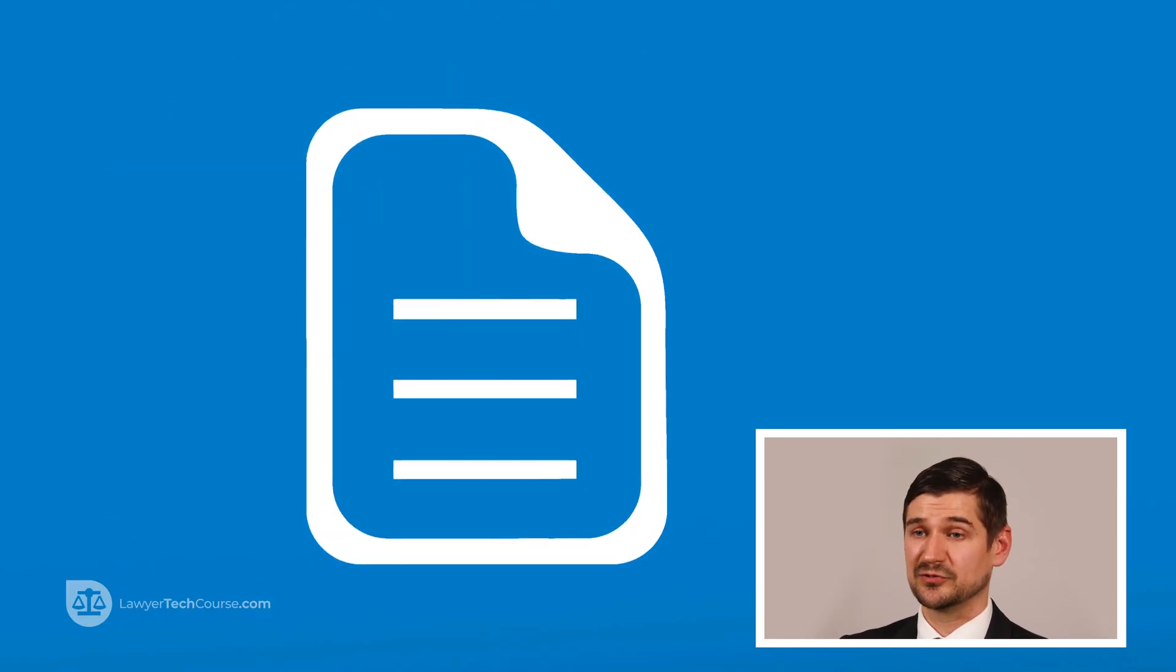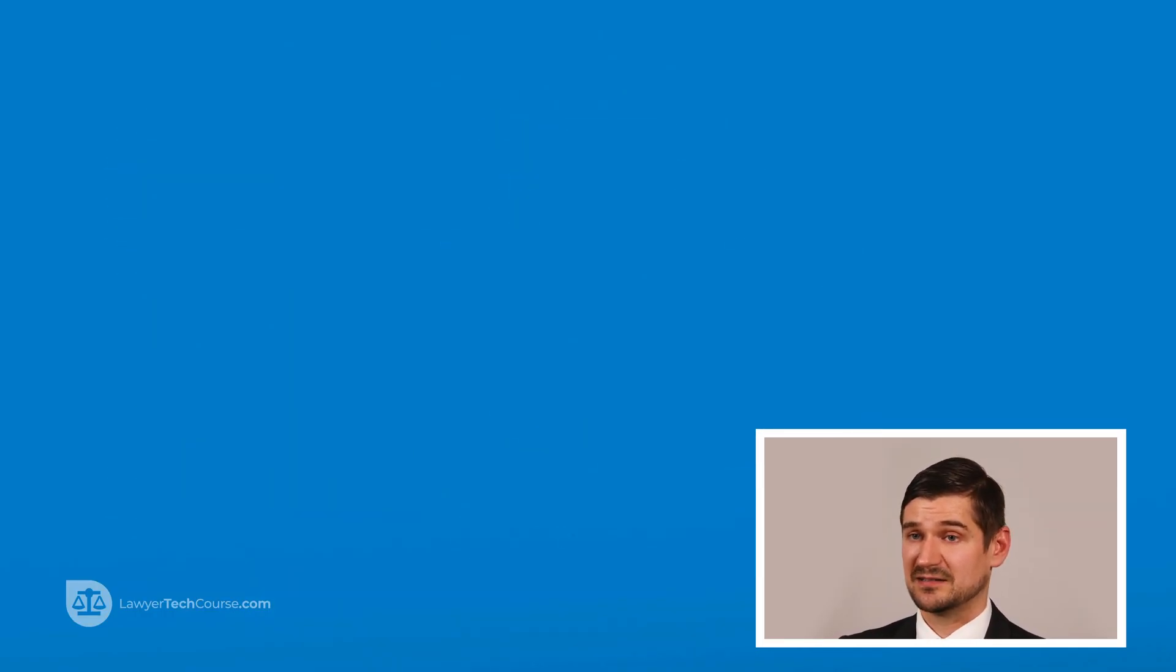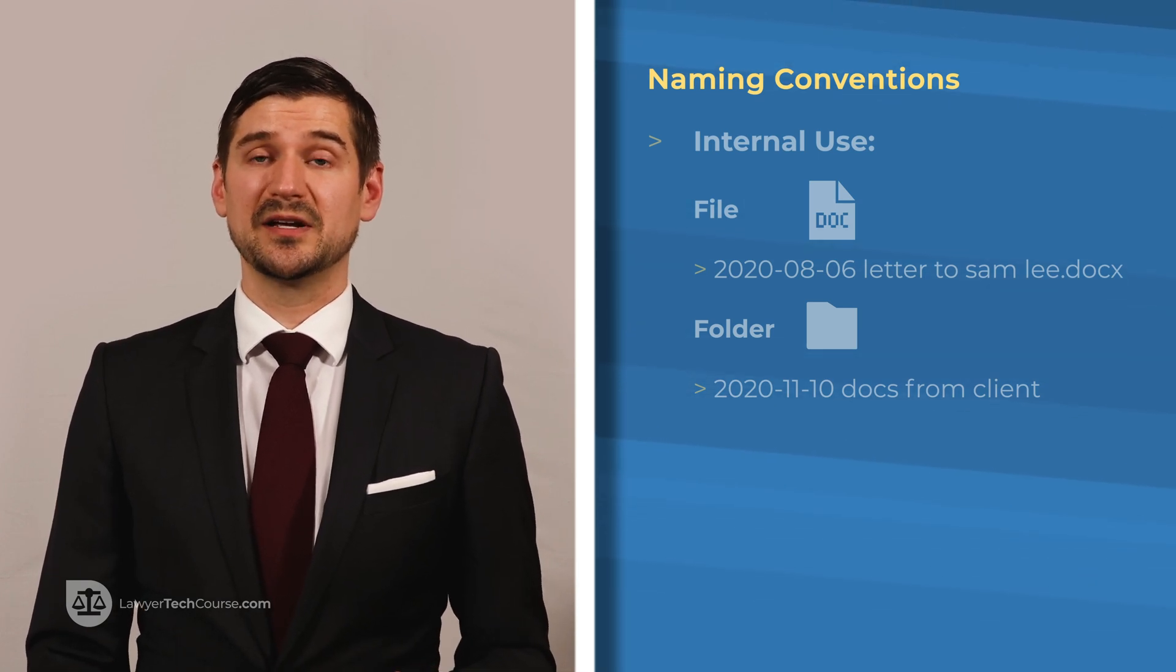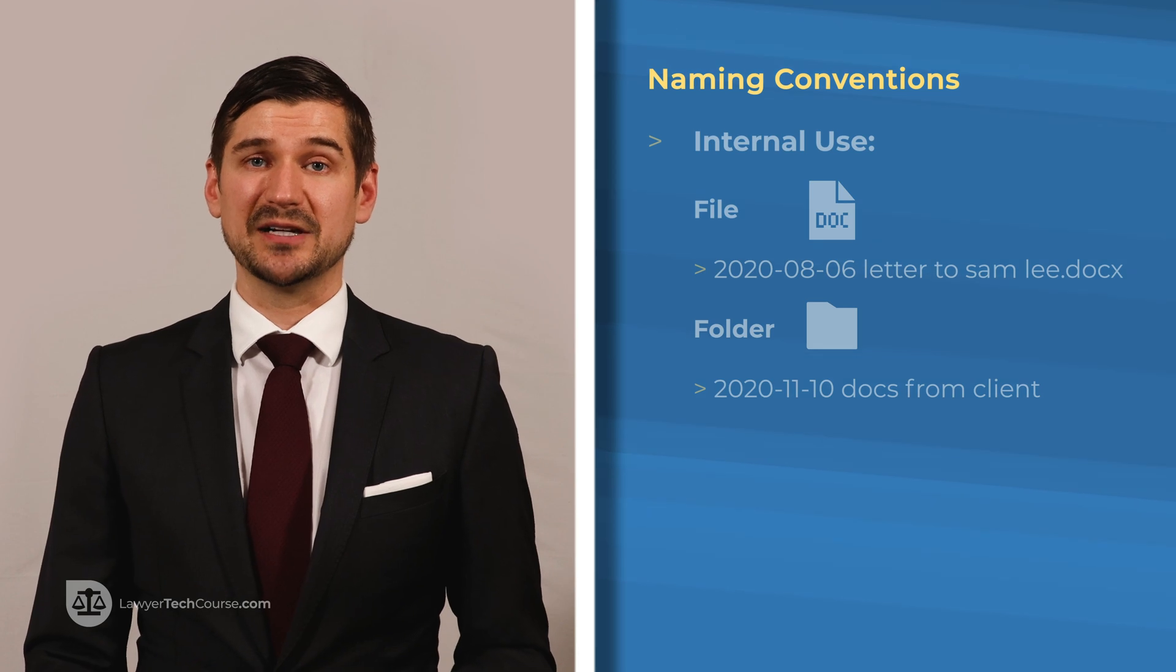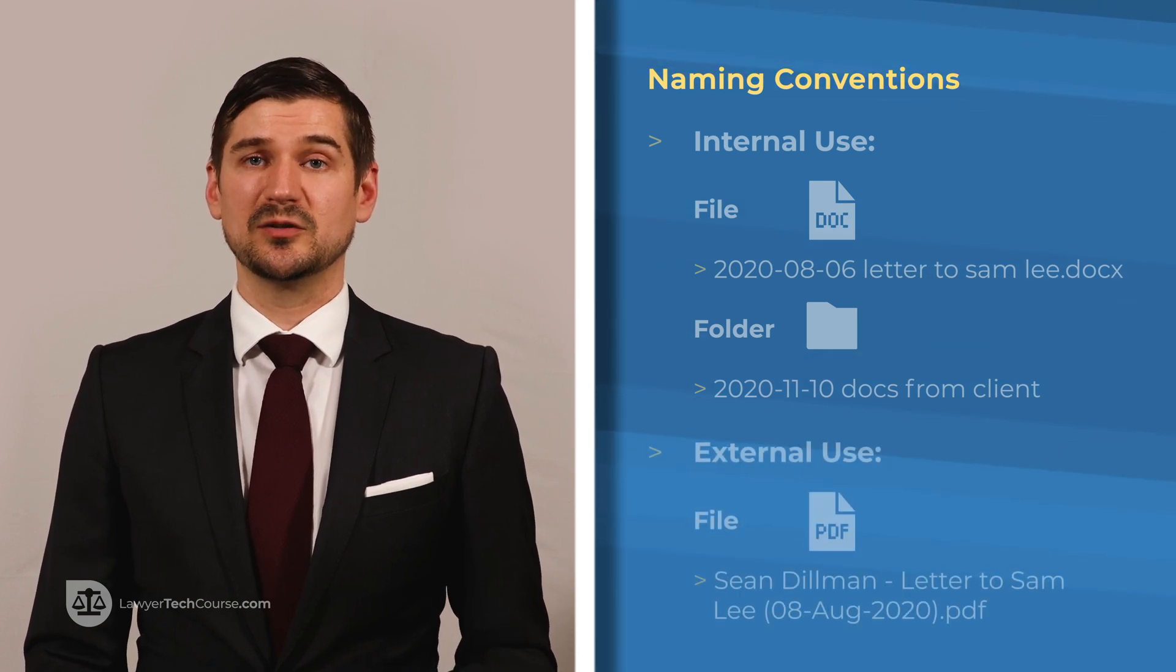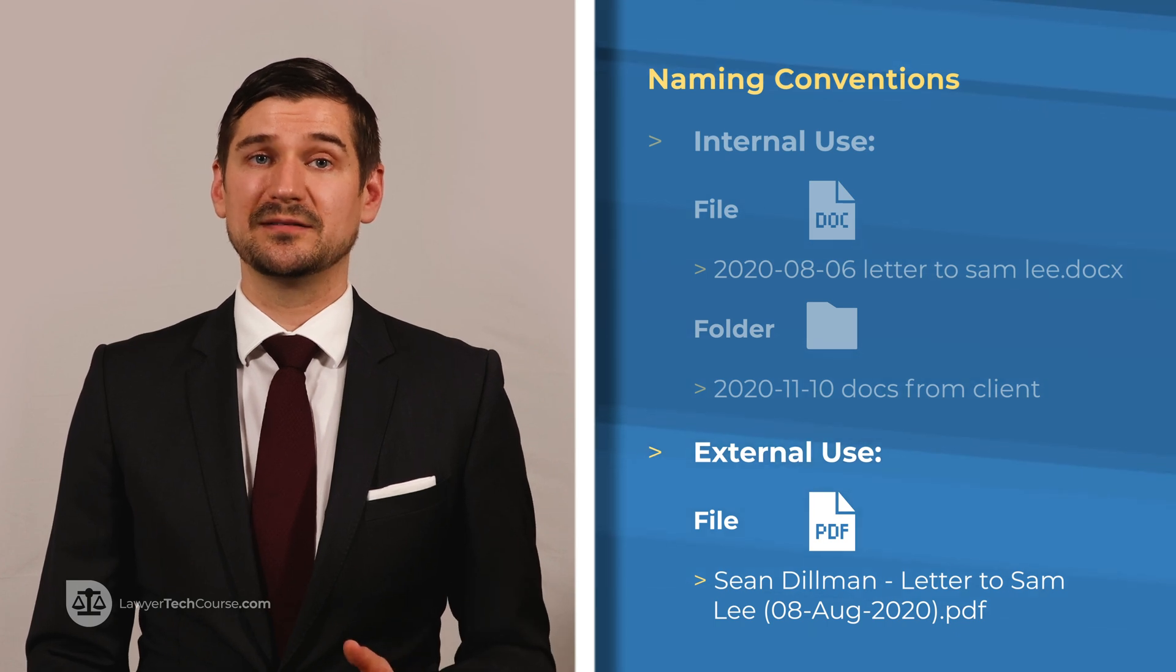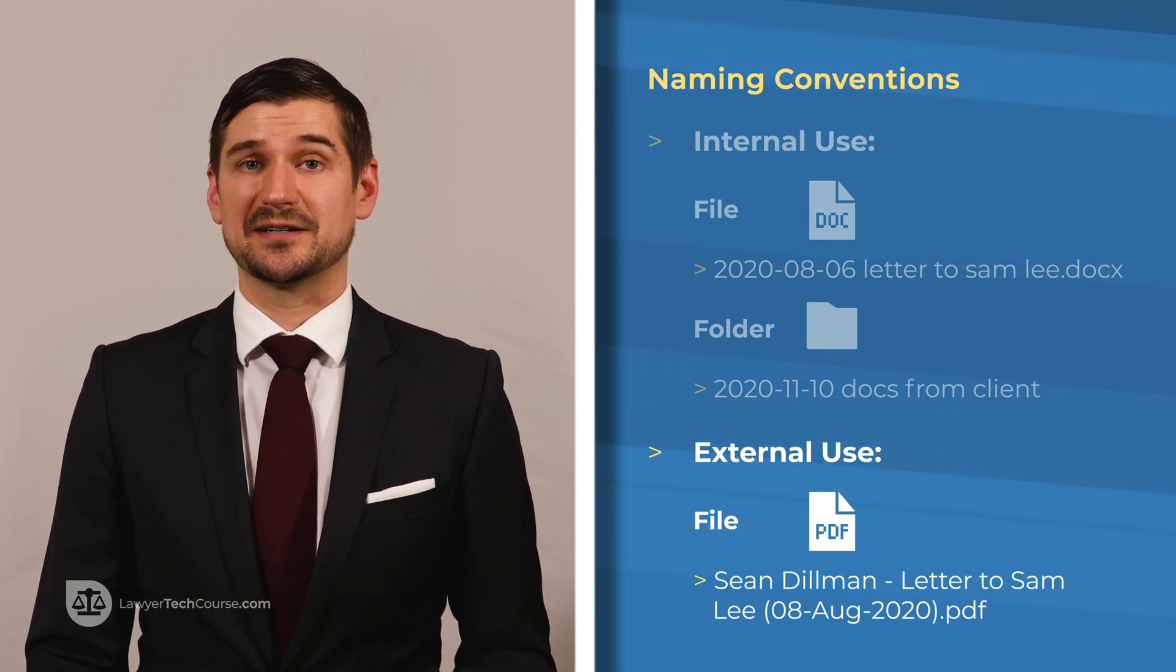Conversely, the external use naming convention looks like this. If I finalize my letter to Sam Lee a few days later on August 8, 2020, and want to prepare it to be sent by email, I name it Sean Dillman dash letter to Sam Lee open bracket 08 dash aug dash 2020 close bracket.